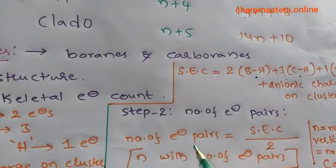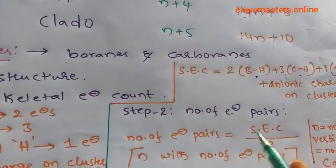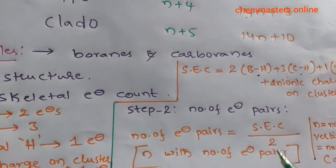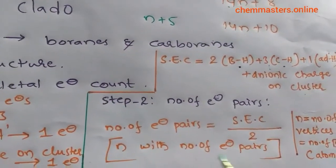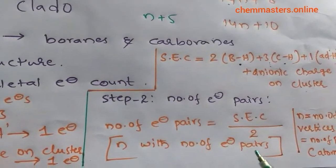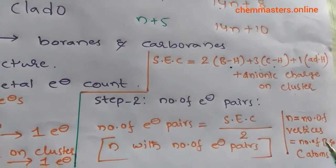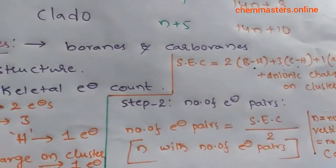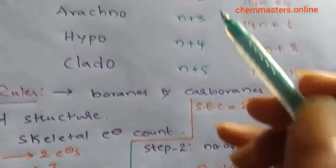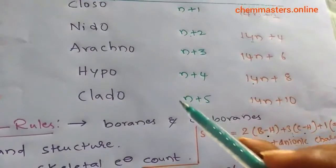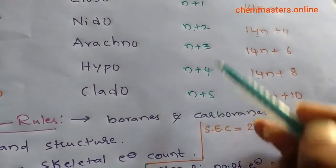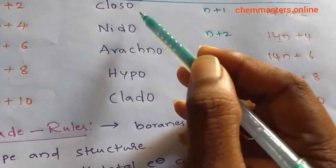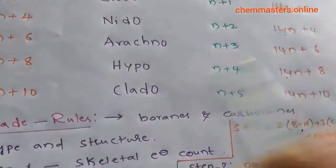In the second step, we calculate the number of electron pairs: number of electron pairs equals the skeletal electron count divided by two. Here, n equals the number of vertices, which equals the number of boron atoms plus the number of carbon atoms. From this, we can calculate n+1, n+2, n+3, n+4, or n+5, and determine whether the given borane belongs to closo, nido, arachno, and so on.